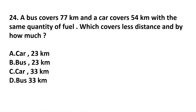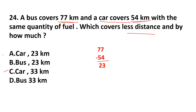Question number 24. A bus covers 77 km and a car covers 54 km with the same quantity of fuel. Which covers less distance and by how much? 54 is less than 77, so the car covers less distance. The difference is 77 minus 54: 7 minus 4 is 3, 7 minus 5 is 2, so 23 km. The car covers 23 km less than the bus. The answer is option A.